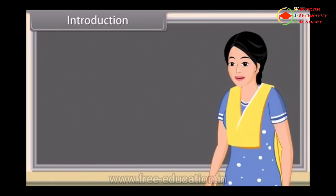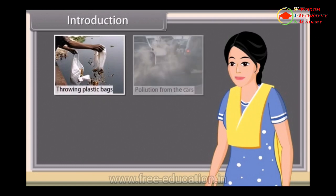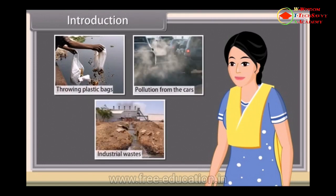Many of our activities destroy the clean state of rivers, such as throwing plastic bags, pollution from cars, and dumping of industrial wastes. Let us explore them in detail and their effects on our environment.